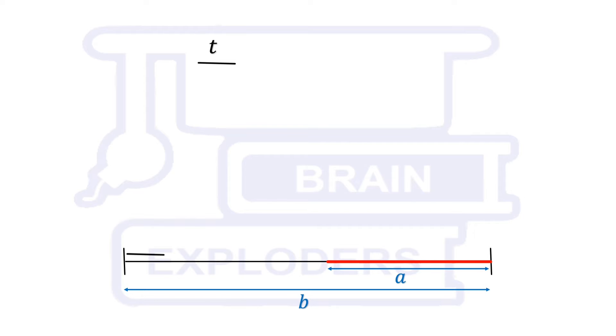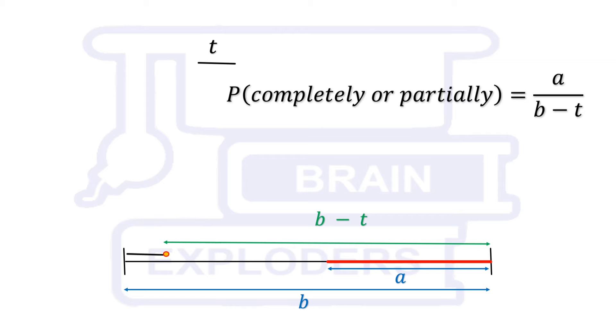To solve this problem, do not look at the whole line segment. Just focus on one of its end points. This end point cannot go towards left otherwise the line segment will get out of the larger line segment. But it can go towards right. So the length of sample space becomes b-t cm. Now to find the probability that this black segment lies either completely or partially on the red segment, favorable region becomes a cm. And if we have to find the probability that this line segment completely lies on the red part, the favorable region becomes a-t cm. So for two different problems, two different answers are written here.